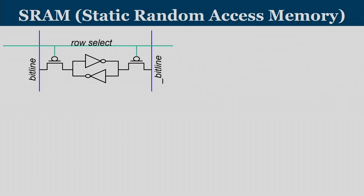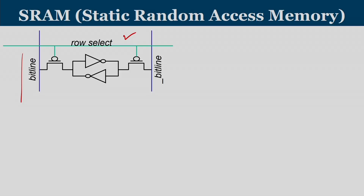This is how an SRAM cell looks. This cell can store one bit of information. We have a row line shown in green and a bit line shown in blue. There is a pair of bit lines for every bit — one is the bit line and one is the bit line complement, which always carries the negated value. We have two cross-coupled NOT gates connected by two transistors.